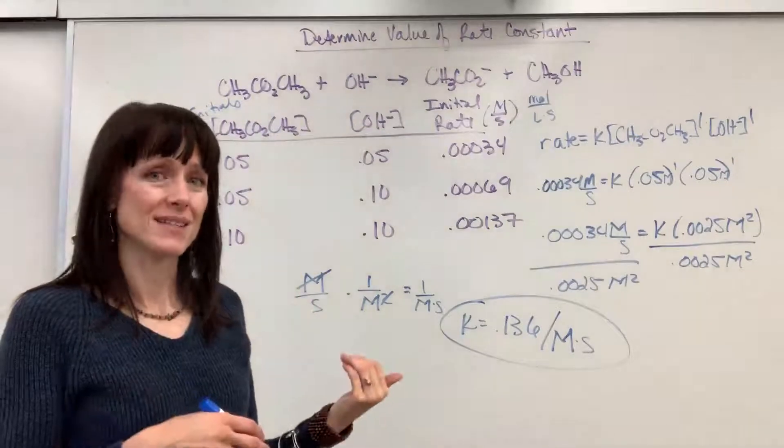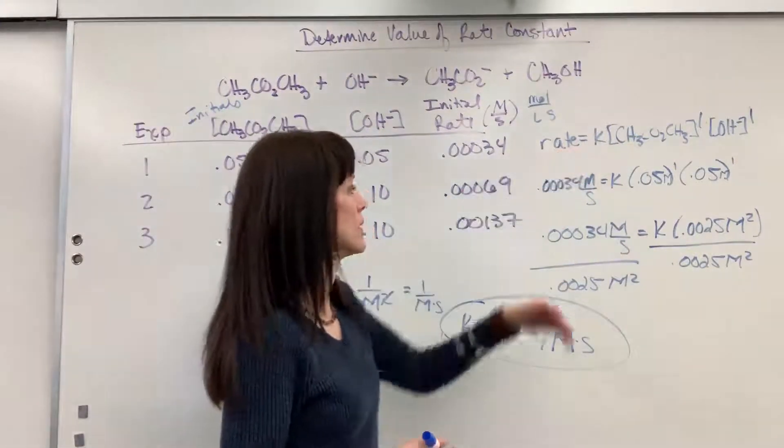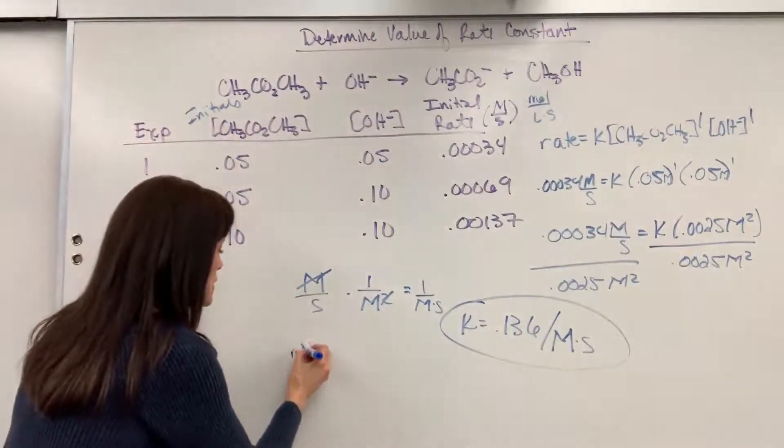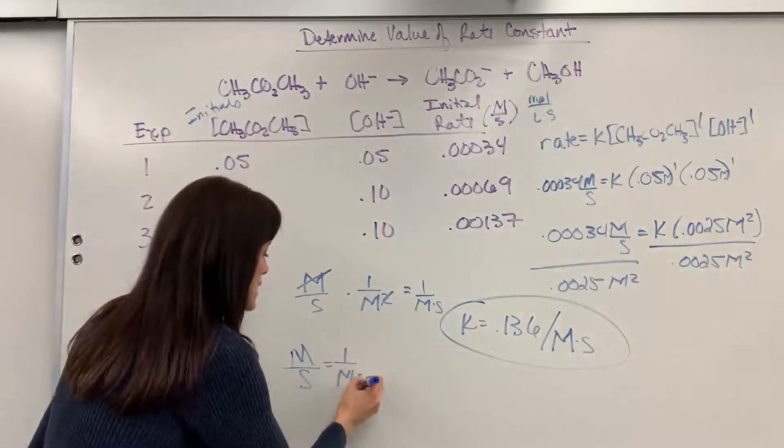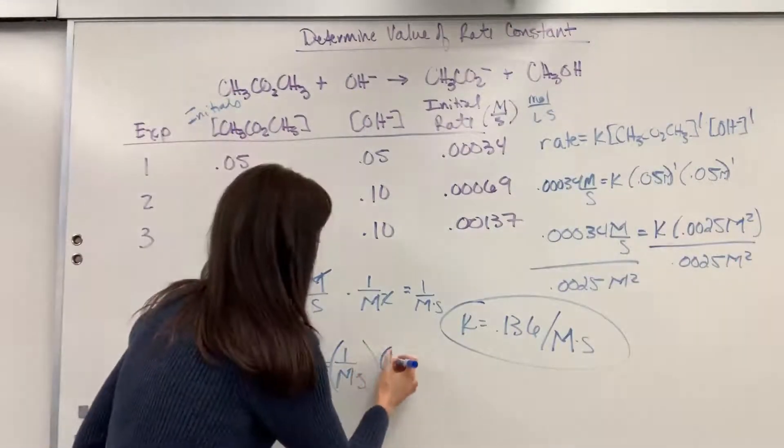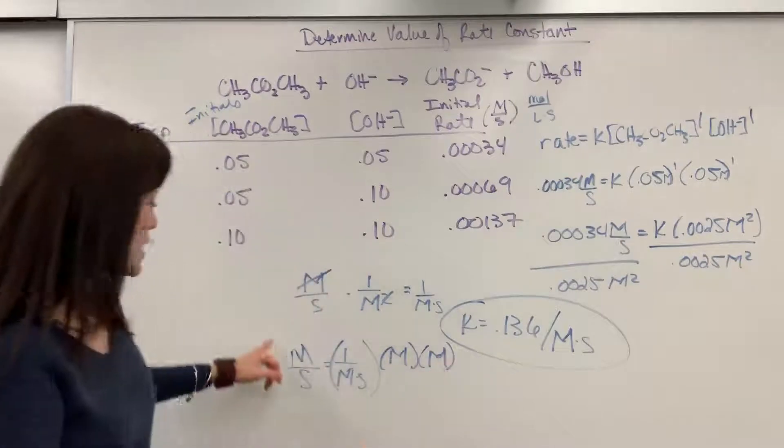If you want, I'll go back and double check my units. So let's double check units here really quick. I'm just going to do the units for you. So rate was molarity per second equals, and then I came up with 1 over molarity times second. So remember, I'm just doing units times molarity times molarity. So that's my rate.